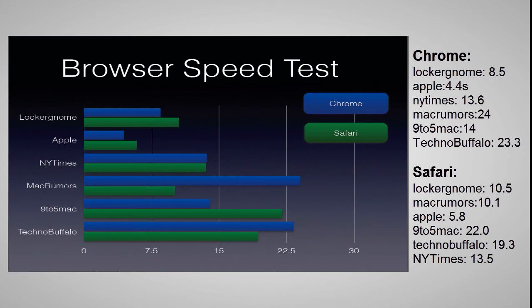NYTimes took Chrome 13.6 seconds, while it took Safari 13.5 seconds. Macrumors took Chrome 24 seconds to load up — Chrome was really struggling when loading Macrumors, no idea why. Safari took 10.1 seconds to load up Macrumors.